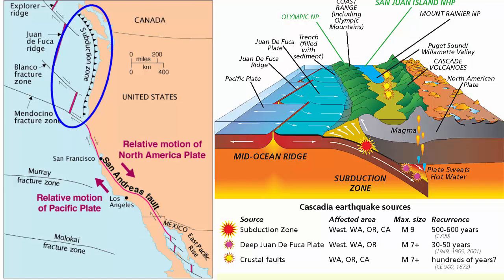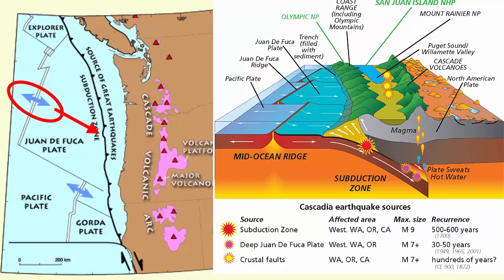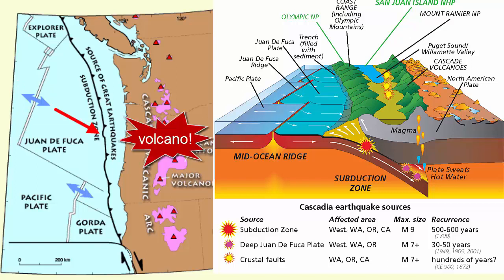North of us in Oregon, Washington, and Northern California, new seafloor forms offshore and then spreads and collides with North America, where it subducts underneath and causes the Cascade volcanoes to form — the southernmost extension of which includes both Mount Shasta and Mount Lassen in Northern California.